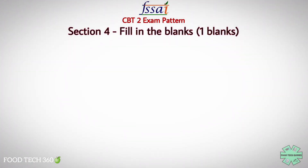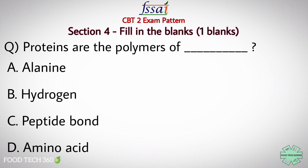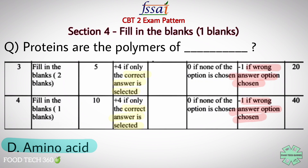Section 4 is also Fill in the Blanks, but only one blank needs to be filled and options will be given. Sample question: 'Proteins are the polymers of ___.' Options: A) Alanine, B) Hydrogen, C) Peptide bond, D) Amino acid. The correct answer is D — Amino acid. For both Sections 3 and 4, plus 4 marks are given for the right answer and minus 1 for a wrong answer. Options are provided — no need to type the answers.